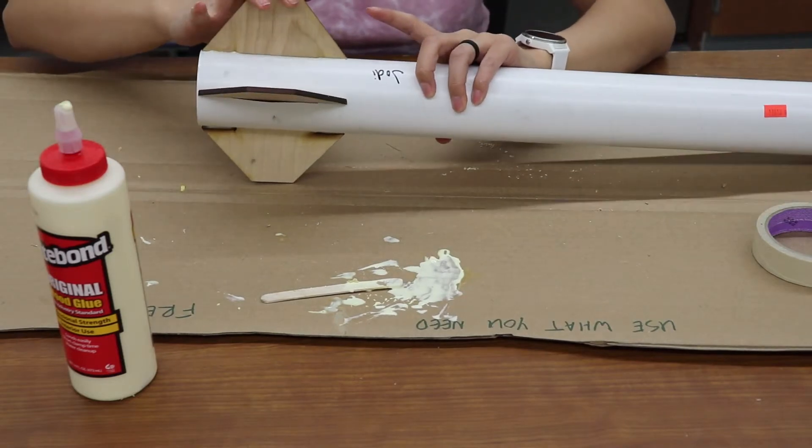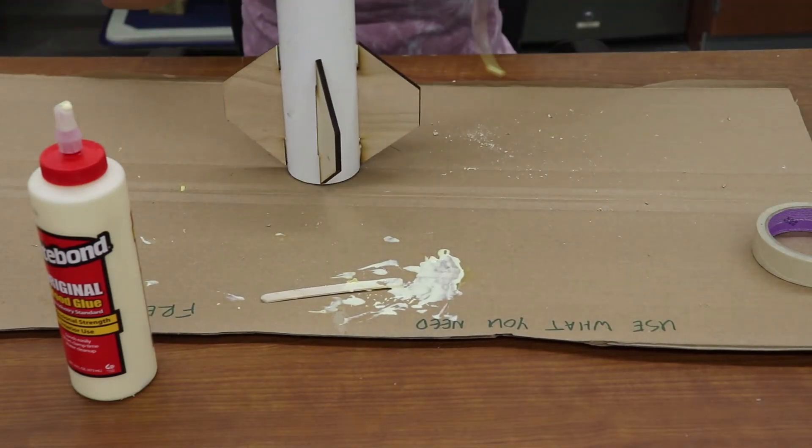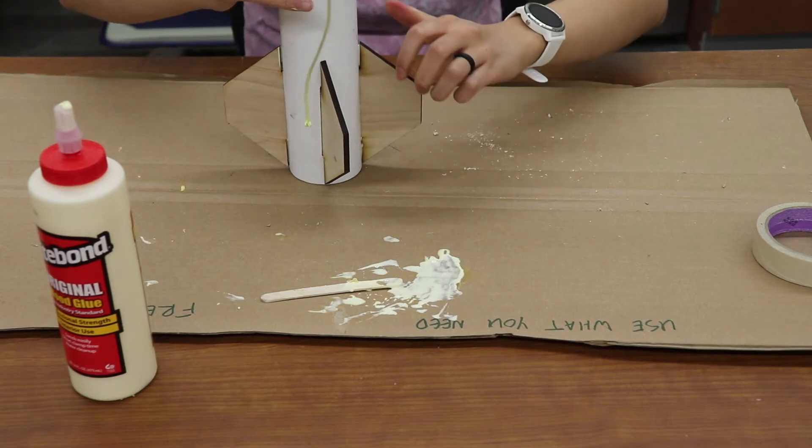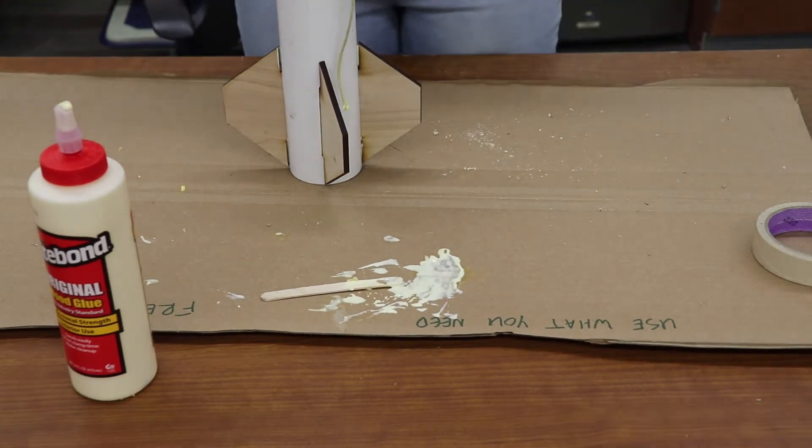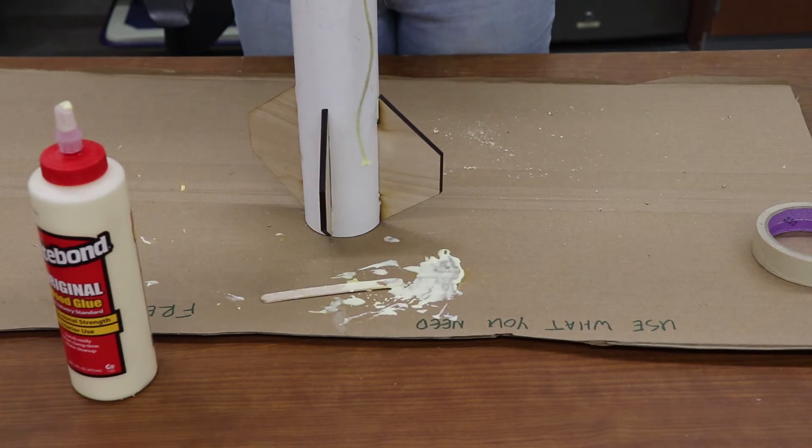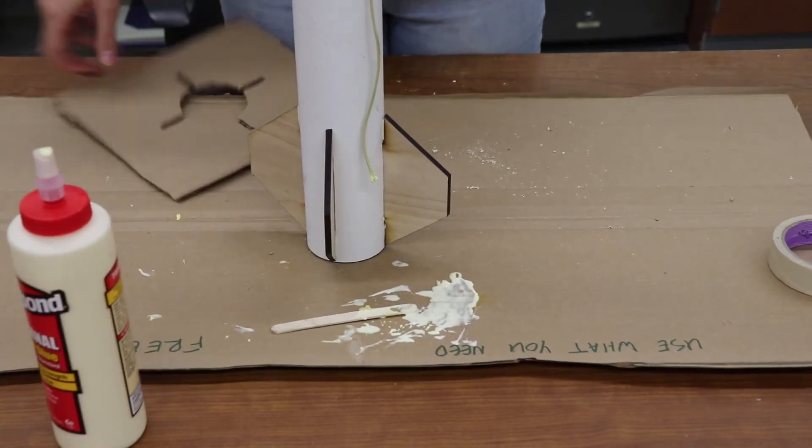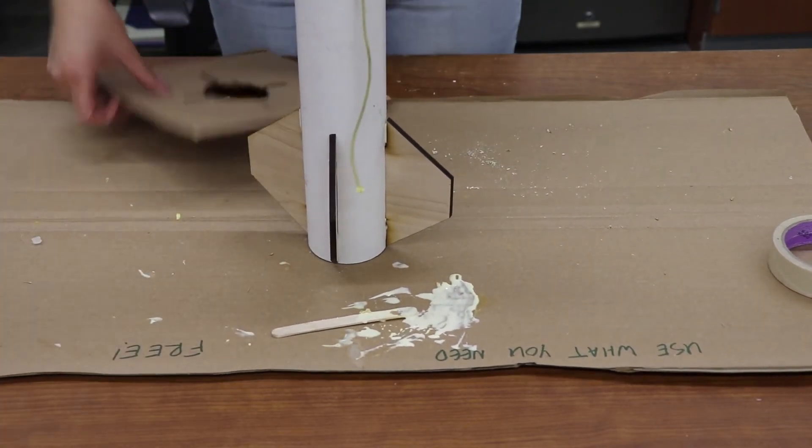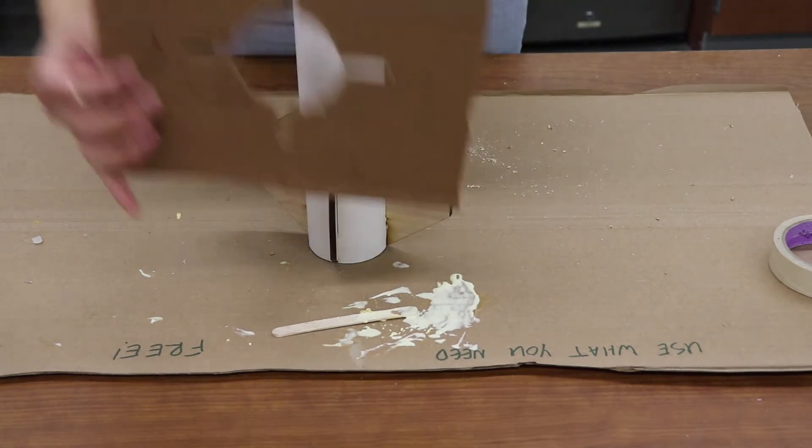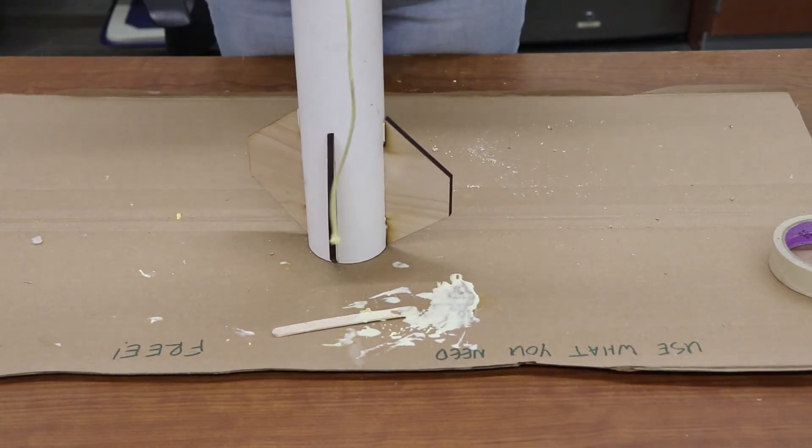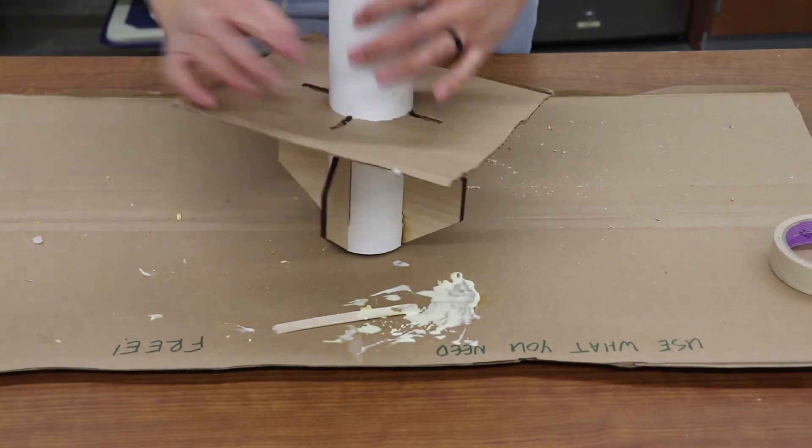Once you finish putting glue on all of your fins, you're going to want to stand your rocket up. We are now going to slide our fin alignment jig over the fins so that the fins can be 90 degrees apart from each other.